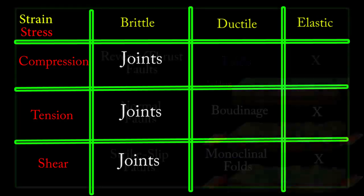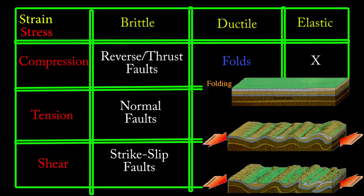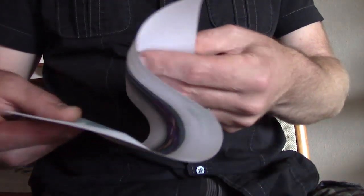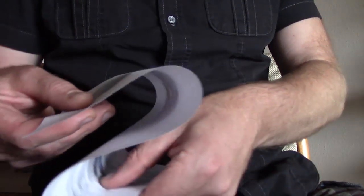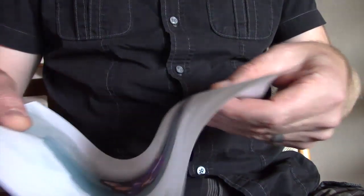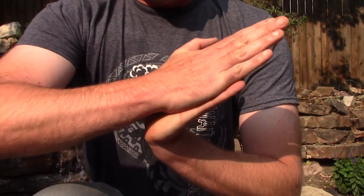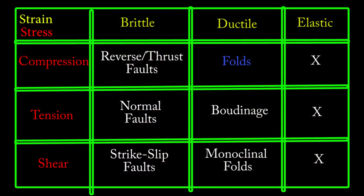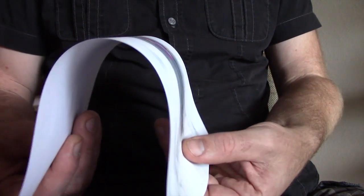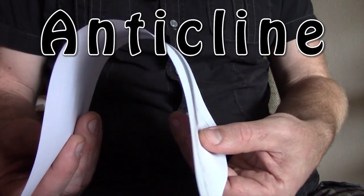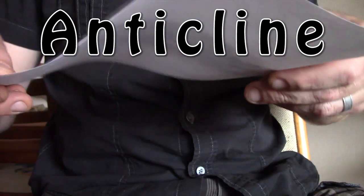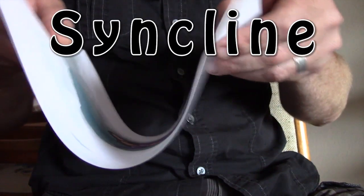We start with compressive stress and ductile strain, which results in folding. Take a piece of paper and push its ends together and it will bend rather than break, and thus make a fold in the paper, not a reverse fault. There are two main types: an upward fold with the crest at the top, which is called an anticline, and a downward fold, which we call a syncline.